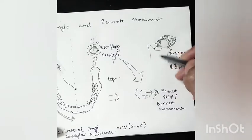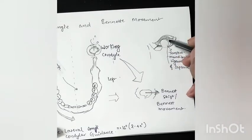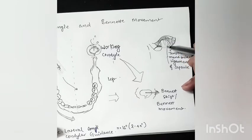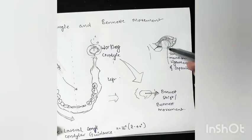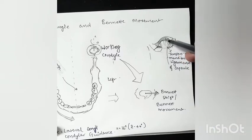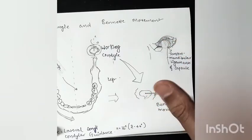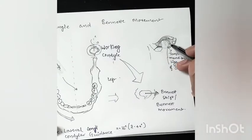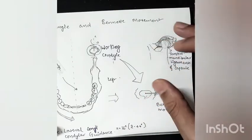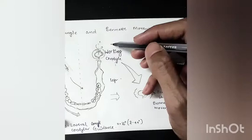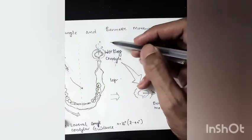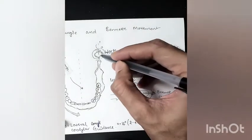Now, the temporomandibular capsule and these temporomandibular ligaments - when this capsular ligament is not tight enough, when it is loose or in normal condition, it may also happen that the working condyle may shift laterally when there is looseness.